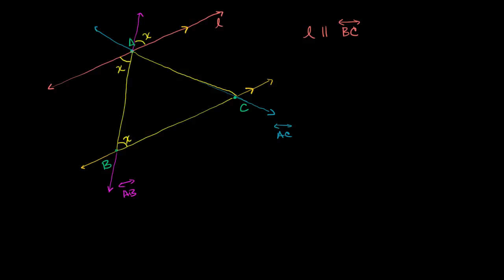Now let's say the measure of this angle in the triangle is Y. So this entire angle — combining X and Y — is X plus Y, because X and Y are adjacent and share a side. Does this whole X plus Y angle have a corresponding angle if we look at transversal AC? Yes, it has a corresponding angle right over here.